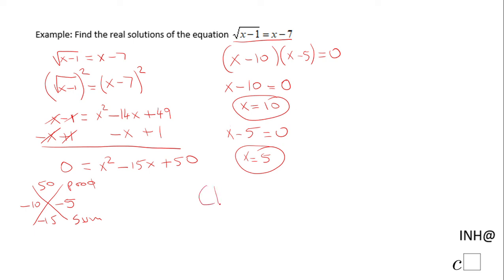Whenever you finish your problem, it's very important to check your solution to see if they work in your original problem. Just by looking at this, 5 minus 7 will be negative 2, so I'm kind of sure this one is not going to work.